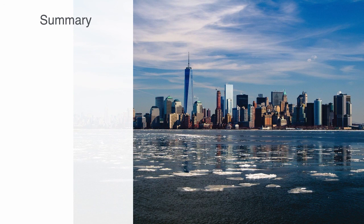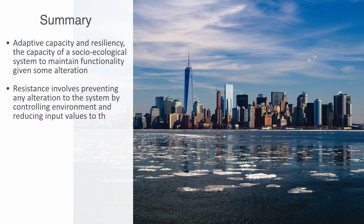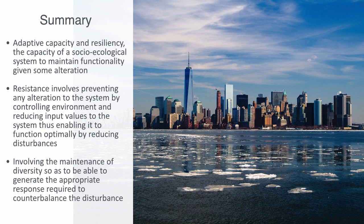In this video we've been talking about adaptive capacity and resilience — the capacity of a socio-ecological system to maintain functionality given some alteration. We talked about the two fundamentally different strategies for achieving this: resistance and adaptation. Resistance involves trying to prevent any alteration to the system by controlling the environment and reducing input disturbances, thus enabling it to function optimally. Adaptation involves the maintenance of diversity so as to be able to generate the appropriate response required to counterbalance a disturbance, thus managing to maintain functionality. We then talked about the adaptive cycle as a model to the process of change within complex adaptive systems, describing four different regimes of exploitation, conservation, release, and reorganization through which the system can evolve.